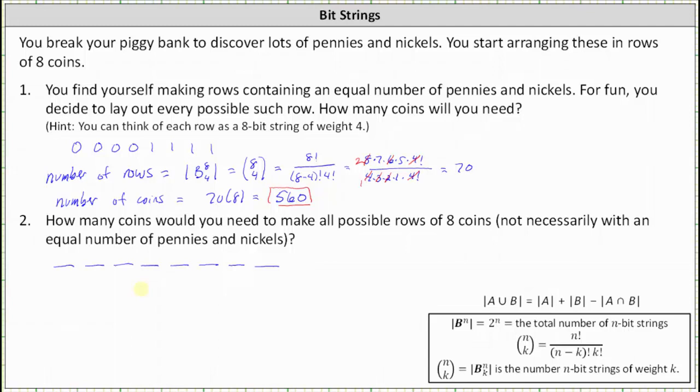...we need to calculate two to the power of n, which means in our case, n is equal to eight. So the number of rows is equal to two to the power of eight, which is equal to 256.